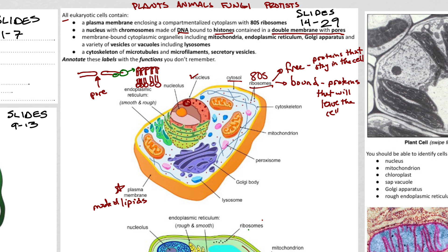There are a bunch of membrane-bound organelles — meaning they are surrounded by a membrane — floating around inside the cell. You have the mitochondria that produces ATP that the cell uses as energy. You have an endoplasmic reticulum: the rough endoplasmic reticulum contains bound ribosomes that make proteins to be sent out of the cell, and the smooth endoplasmic reticulum does not contain ribosomes — that's where a lot of lipids are synthesized for other membranes.